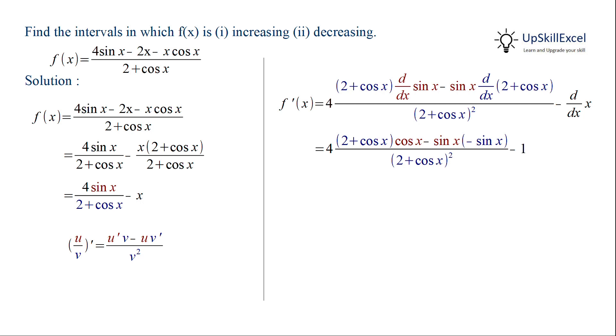Taking LCM for the last term, 1 becomes 2 plus cos x square, then expanding the square and doing further simplification, we get f prime x equals cos x multiply by cos x plus 4 divided by 2 plus cos x square.